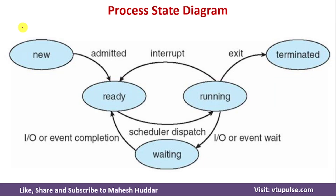By default, the program is stored on secondary storage. Whenever we want to execute it, it will be put into something called the job queue, which is also on secondary storage. For example, if I want to execute two programs, P0 and P1, both will be put into the job queue. If there is no space in primary memory at that point, these processes will wait in the job queue.